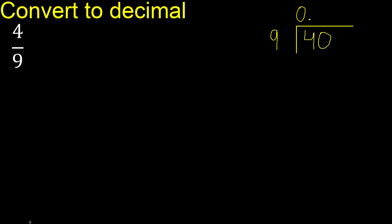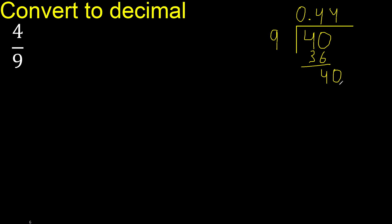9 multiplied by which number is nearest to 40 but not greater? 9 multiplied by 5 is 45 — that is greater. 9 multiplied by 4 is 36 — ok, not greater. 40 minus 36 is 4. The remainder is not zero, so complete with 0. Point: 40. 9 multiplied by 4 is 36 — subtract and complete.